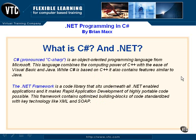The .NET framework is a code library that sits underneath all .NET-enabled applications. This really makes rapid application development highly portable and extremely possible. The next version of Windows, codename Longhorn, coming out in 2006, is going to require working with the .NET framework, pushing it into the operating system so programmers are creating fast, optimized code that's easier for everybody to program in.